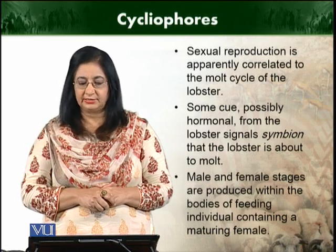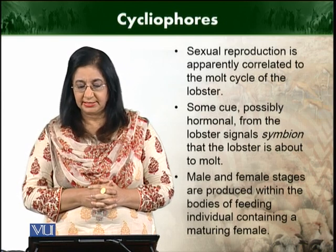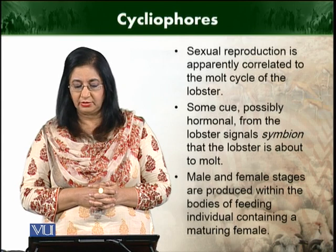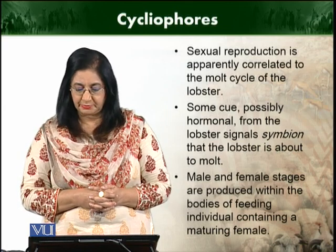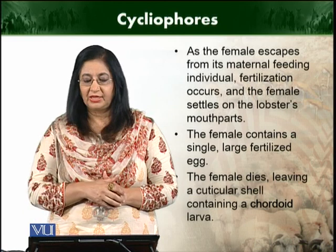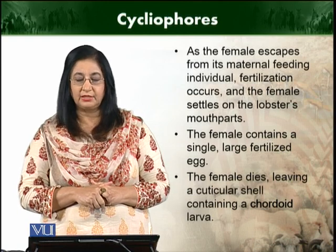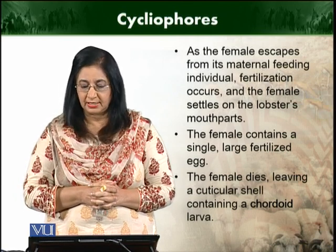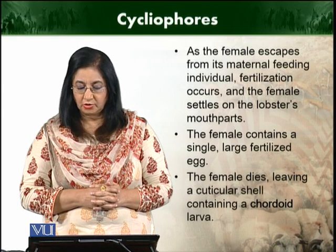Sexual reproduction is apparently correlated to the molt cycle of the lobster. Hormonal changes take place, and hormones produced from the lobster signal Symbion when molting occurs. Male and female stages are produced within the bodies of feeding individuals that contain the mature female. As the female escapes from its maternal feeding individual, fertilization occurs. The female then settles onto the lobster's mouthparts and contains a single large fertilized egg. If the female then dies, it leaves a cuticular shell containing a chordoid larva.